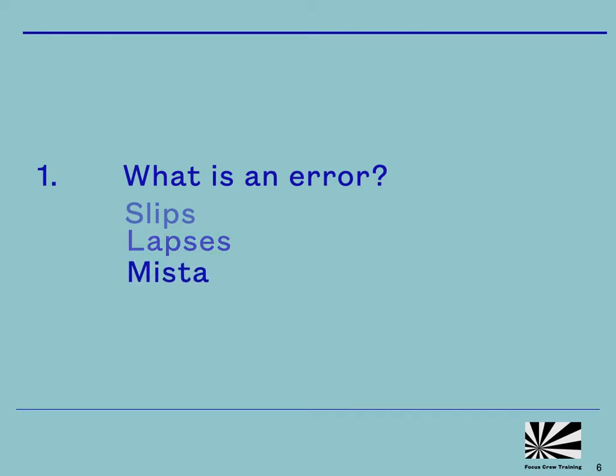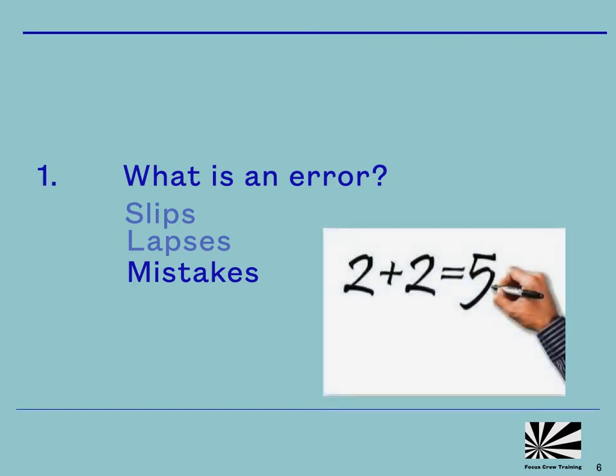Mistakes happen when we're working with the wrong information, either because we've made a mathematical error calculating weight and balance, fuel endurance or performance calculations, or it's because what we think we know about the helicopter and its systems is actually incorrect.